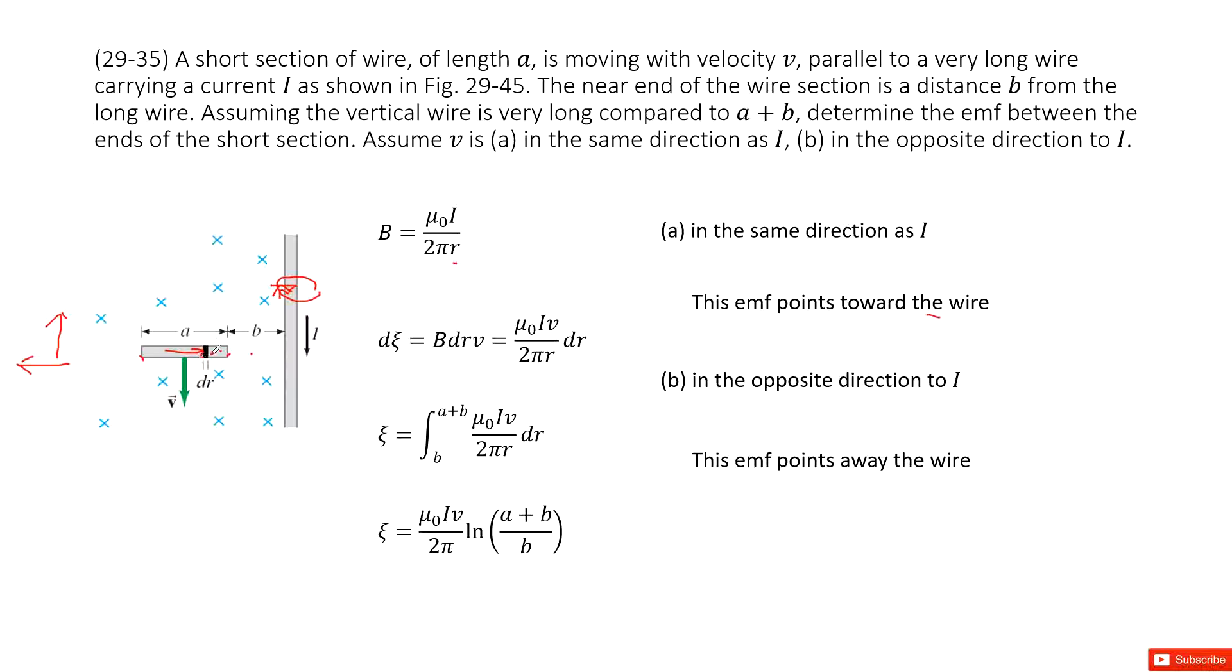We cut this short wire in infinity sections. Each small section, we can consider it's a small bar. This small bar, the length is dr. So we can get the induced EMF by this small fraction, is B times L times v. L, this one, we can replace it as dr. Now we input B inside. The function d epsilon is a function with dr. So now we do the integral for R from b to b plus a. At this end is b, this end a plus b. Finally, we get an equation like this one.